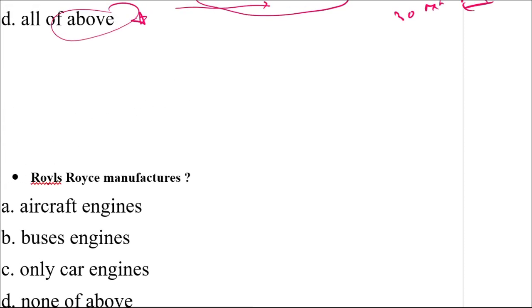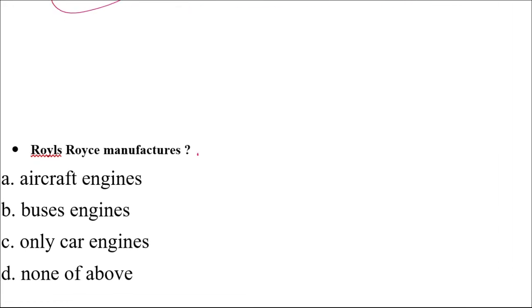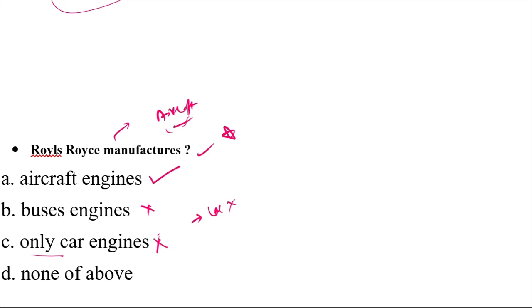Rolls Royce manufactures what type of engines? From the chapter on aircraft manufacturing, it is very clearly stated that Rolls Royce manufactures aircraft engines. They don't only deal with car engines — they also deal with aircraft engines. None of the above is not the answer because Rolls Royce does manufacture aircraft engines. The correct answer is aircraft engines.